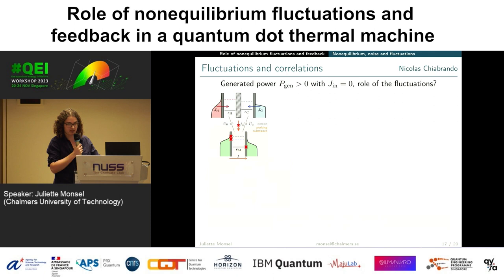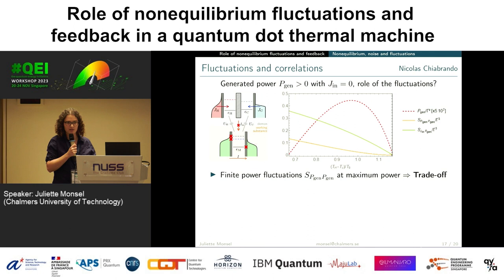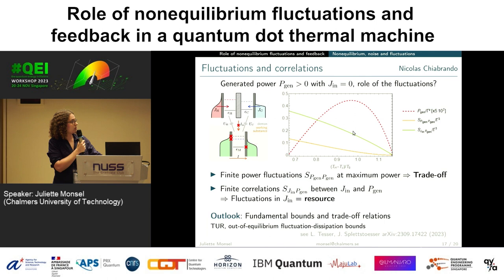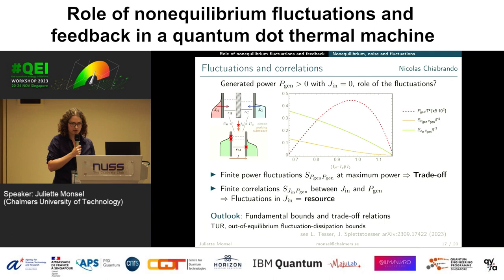If we look at the power and its fluctuations, the first thing to note is a trade-off: if we don't want any fluctuation — a fully reliable engine — then we don't have any power output. The second thing is that with finite coupling, we have some finite correlations between the heat flow j and the generated power, even though j on average is zero. This means there are useful fluctuations in there, and our outlook is to understand better what are the fundamental bounds associated with these fluctuations — for instance, thermodynamic uncertainty relations or out-of-equilibrium fluctuation-dissipation bounds.